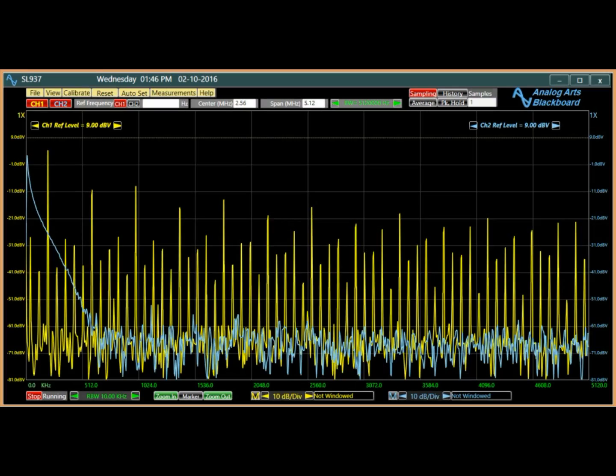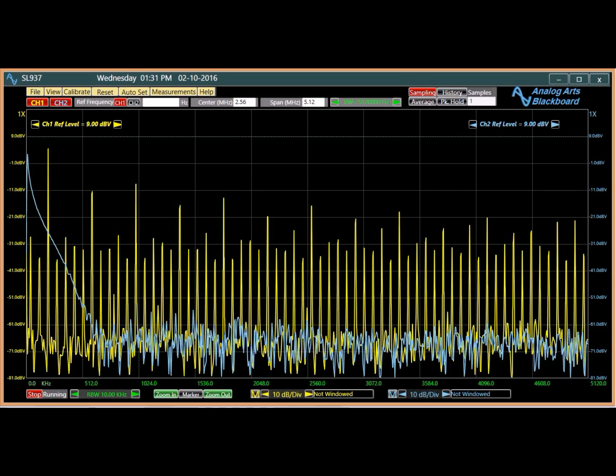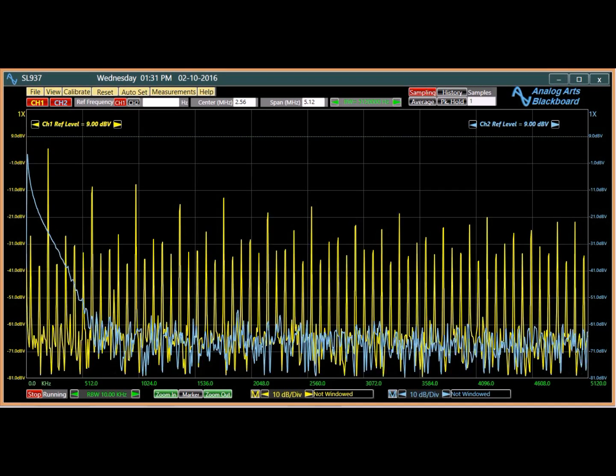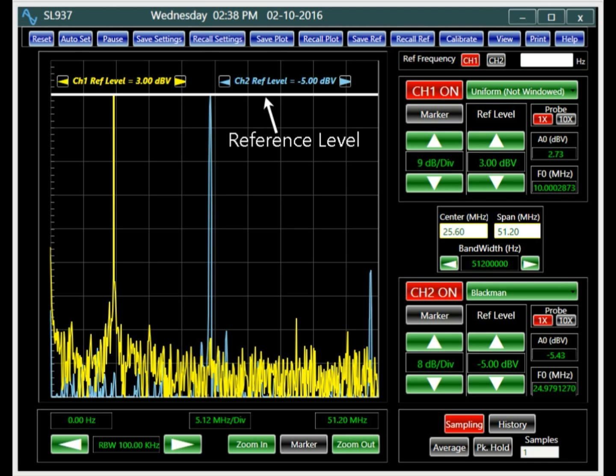First, a spectrum analyzer displays the amplitude of the signal versus frequency. Second, a spectrum analyzer uses a logarithmic scale for the plot. And third, a spectrum analyzer's vertical scale is a ratio, therefore a reference level is required for the signal analysis.